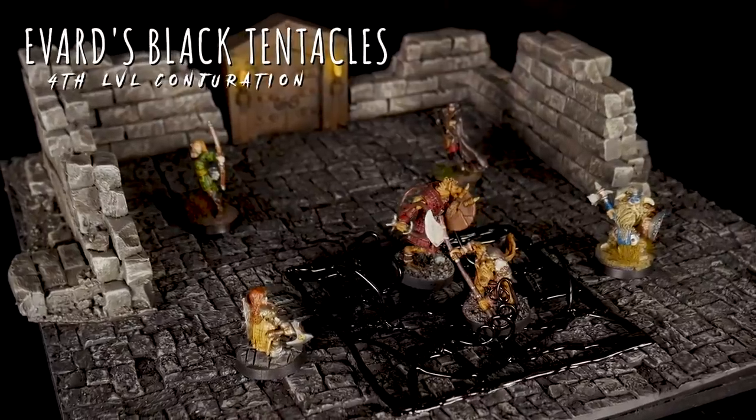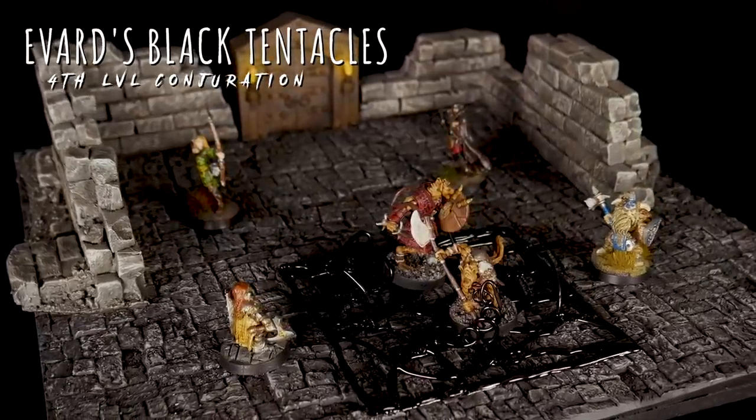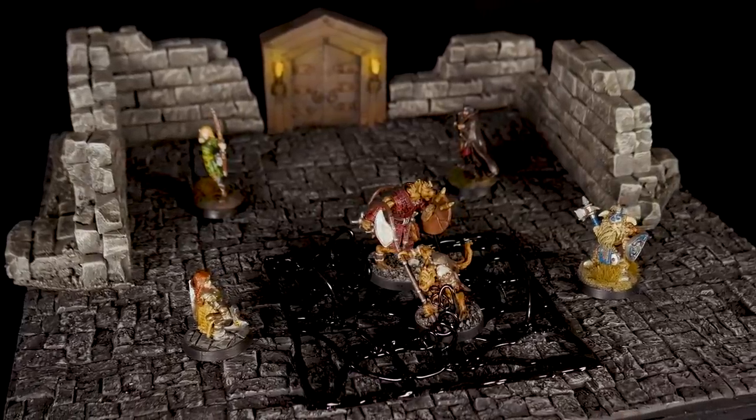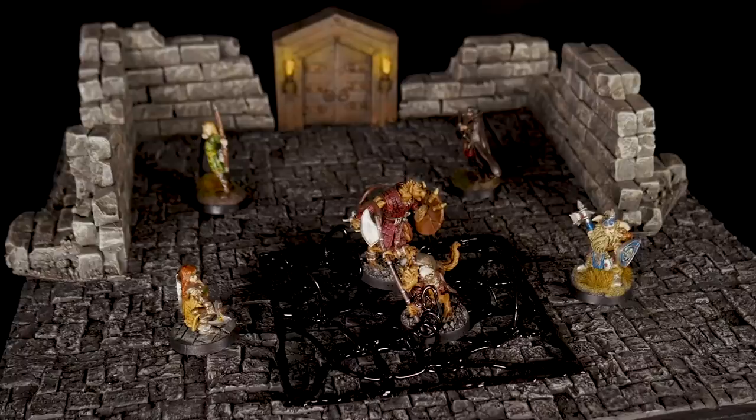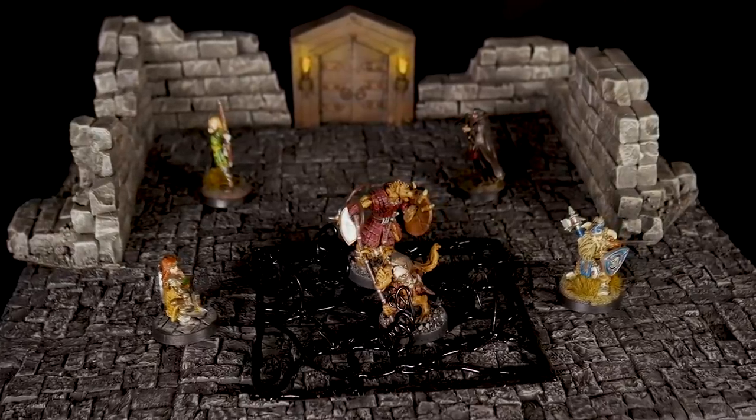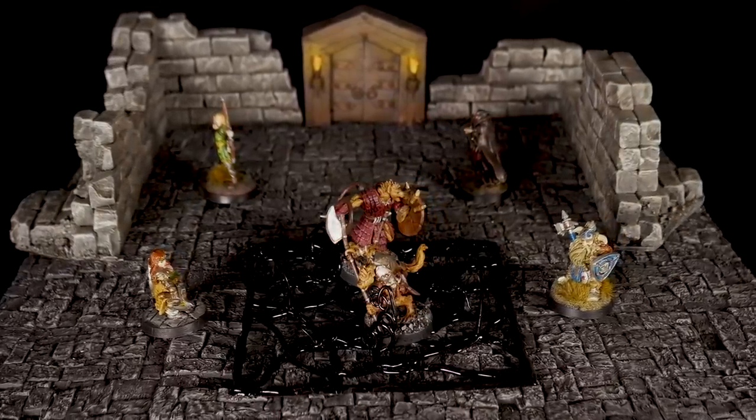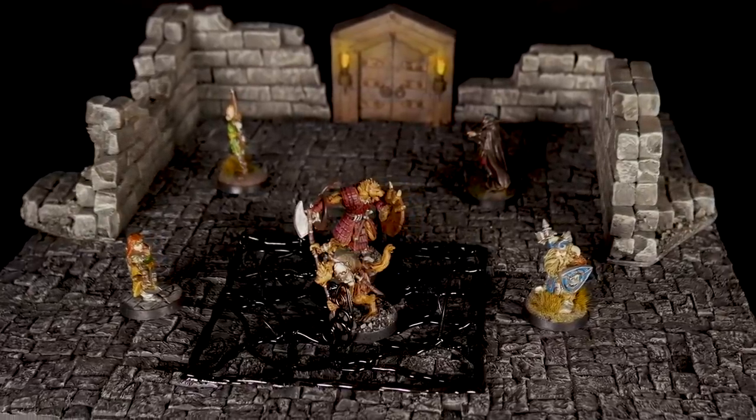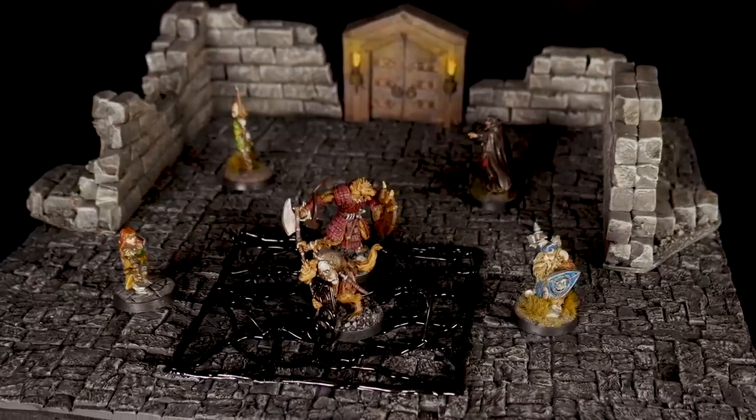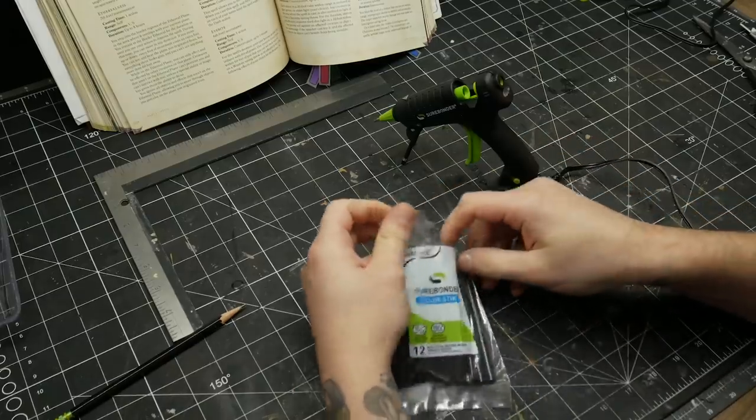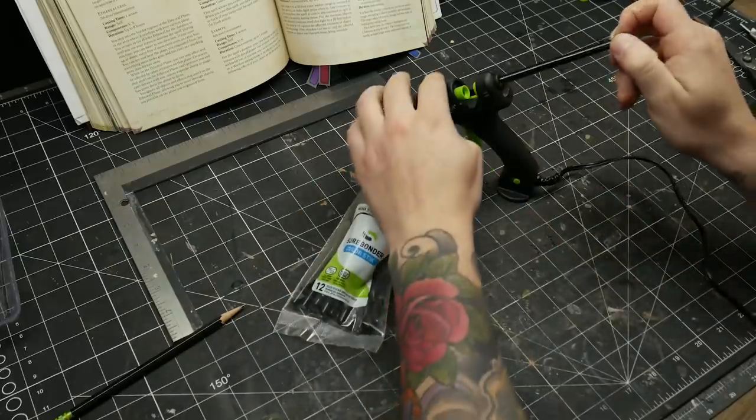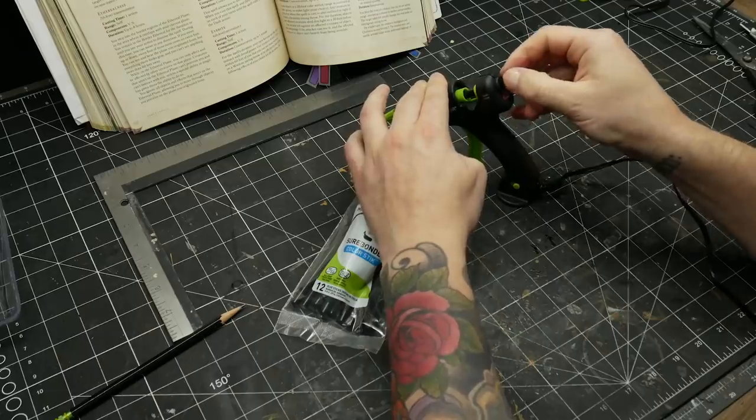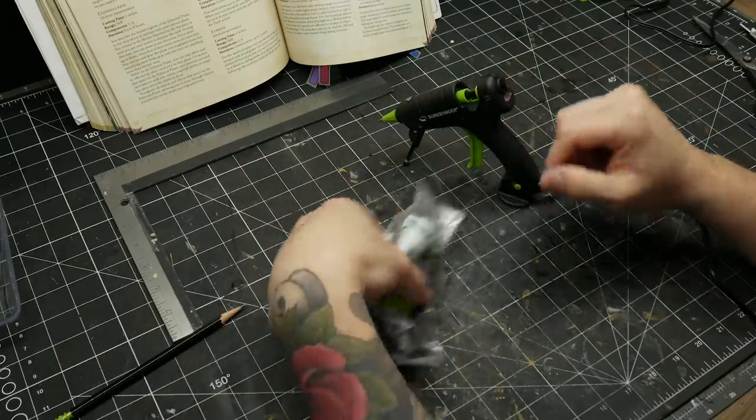First up was Everard's Black Tentacles. Squirming ebony tentacles fill a 20-foot square on the ground that you can see within range. For the duration, these tentacles turn the ground in the area into difficult terrain. When a creature enters the affected area, the creature must succeed a dexterity saving throw or take 3d6 bludgeoning damage and be restrained by the tentacles until the spell ends. For this, I used black hot glue. This is totally not required. It could be done with regular hot glue and then spray-painted black, but this will make them more durable and gives a really nice wet look without having to add a gloss coat.